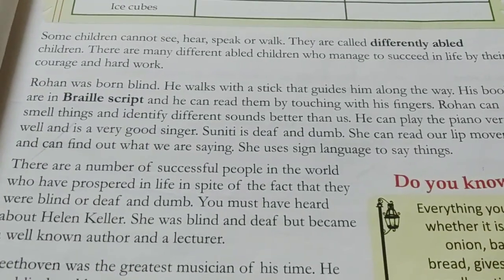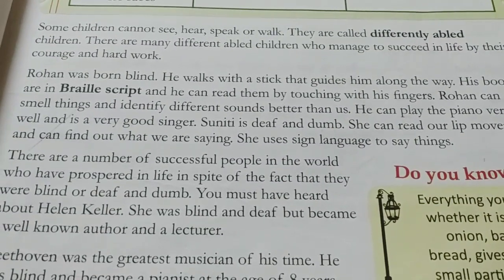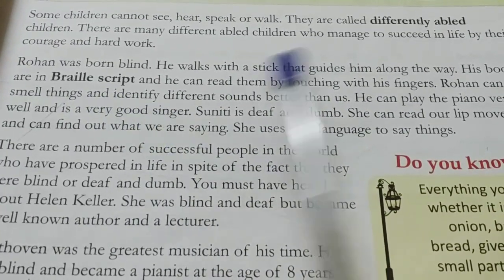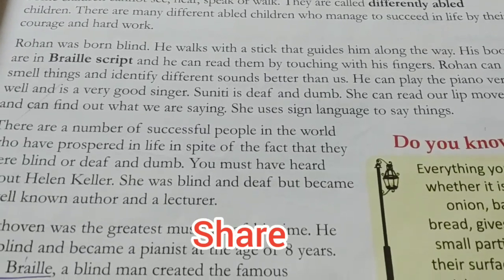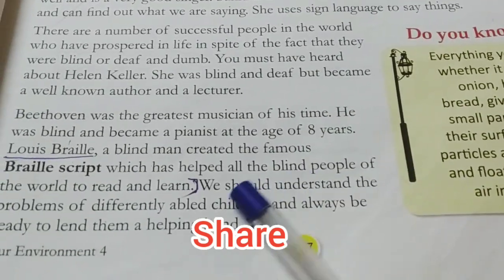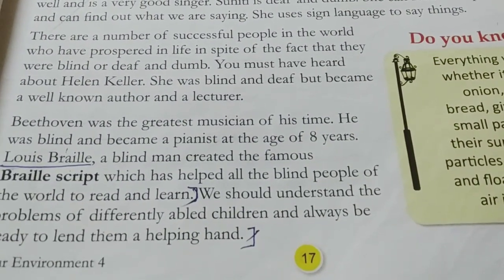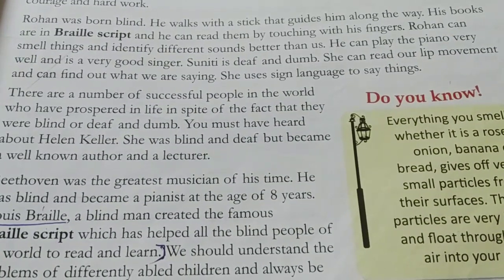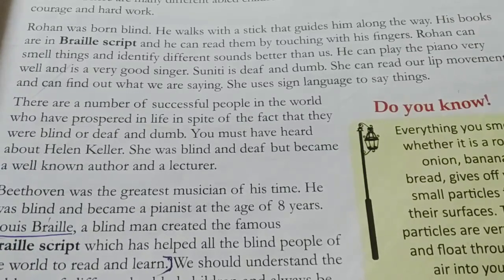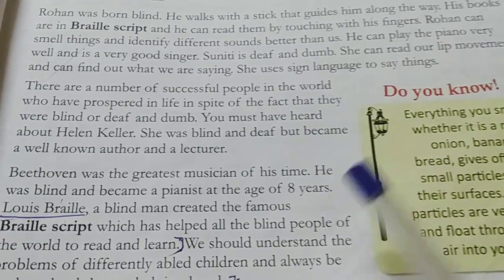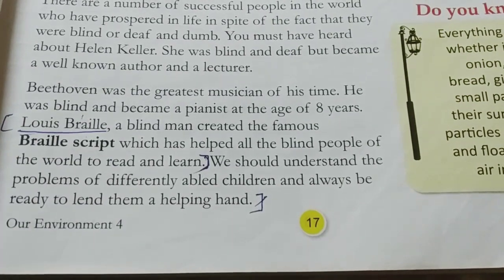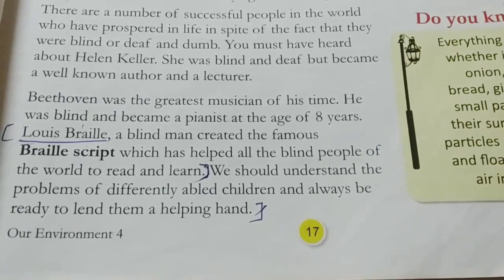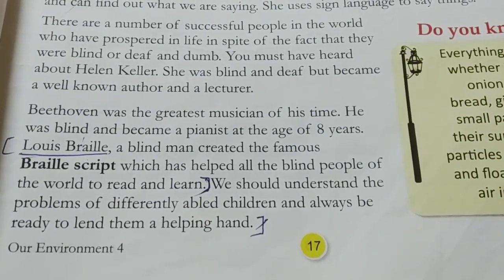Differently abled children manage their lives with courage and hard work. Their books are written in Braille script, and they read by touching the pages with their fingers. Braille script was invented by Louis Braille, a blind person. There are many successful differently abled people in the world — for example, Beethoven, who became a pianist, and Helen Keller, who was a lecturer and well-known author.